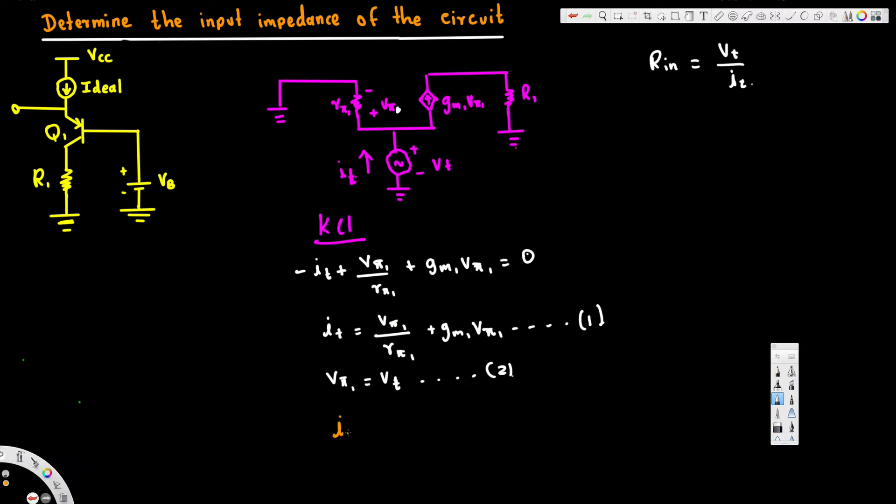So this is going to be: it is equal to vt over r51 plus gm1 times vt. And here to take the vt out, we can take vt common.